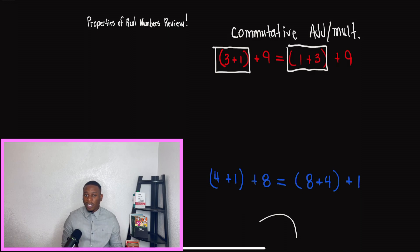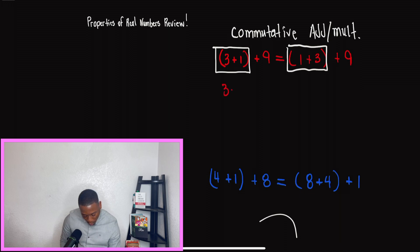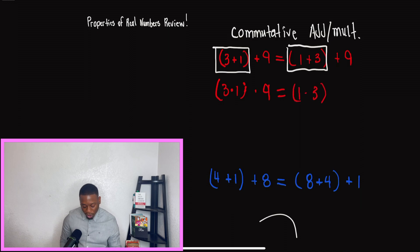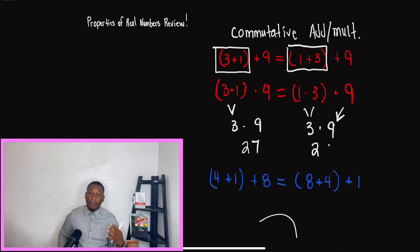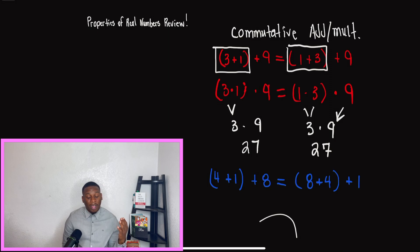Before we go further, understand that when we're talking about properties of real numbers, it only applies to properties of addition and properties of multiplication. You will not see properties for subtraction or division. So as we're saying with the commutative property, whether it's addition or multiplication, even if we change the order that we multiply, the answer is still going to be the same. Three times nine gives us 27, and on the other side we get the same exact thing.